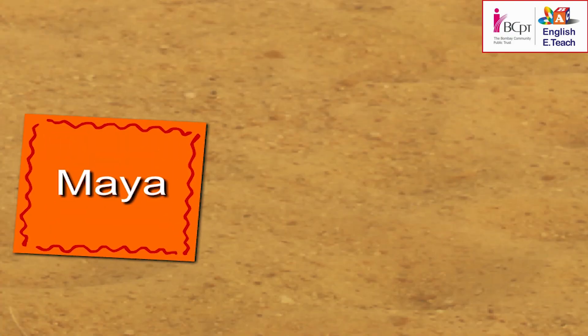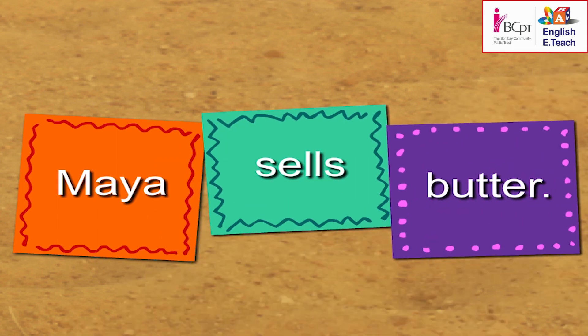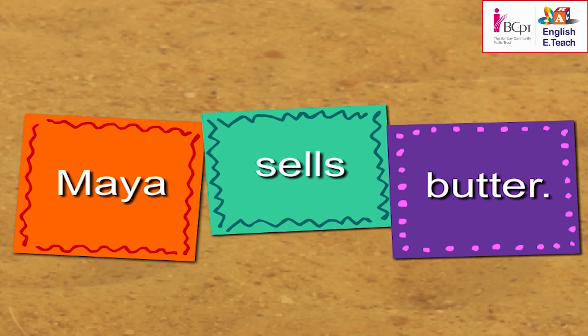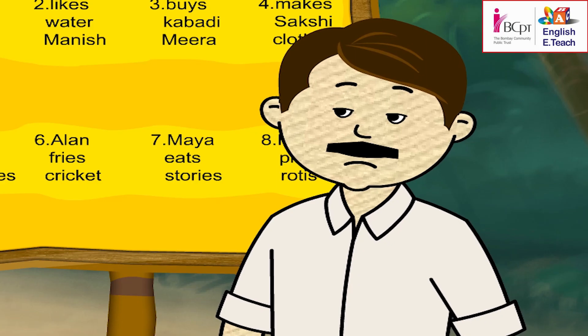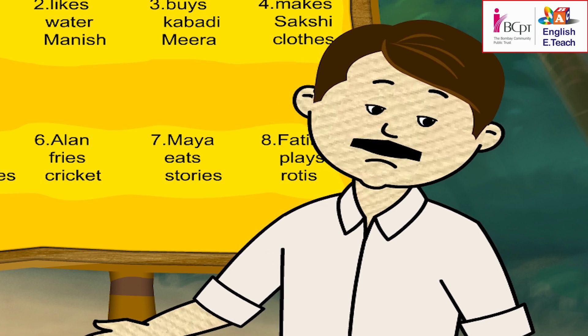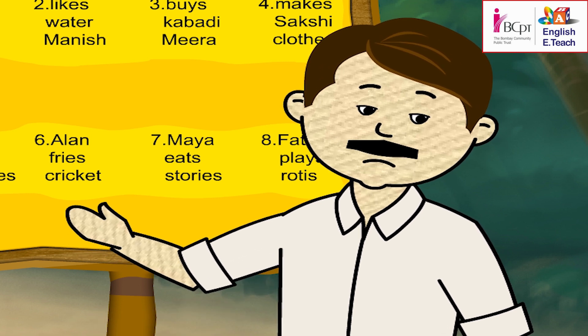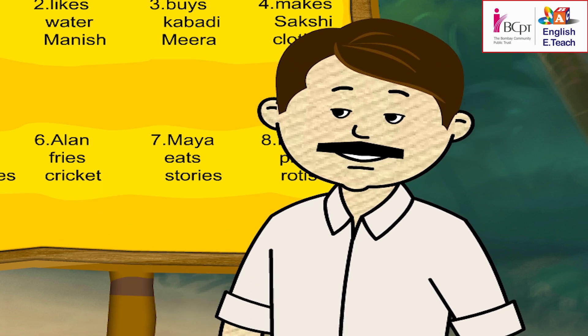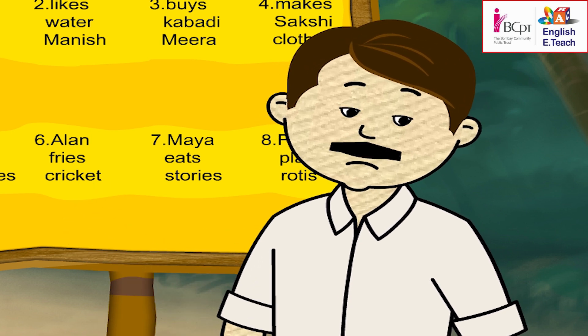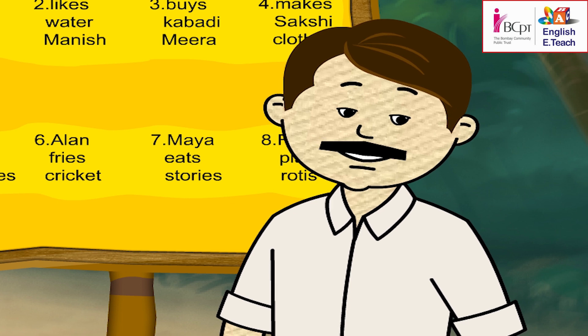I will now make a sentence on the sand with three cards. Look at this. Can someone read this? Maya sells butter. Come up here, Sachin. Pick a card from the box. Show the card to the class and say the word.